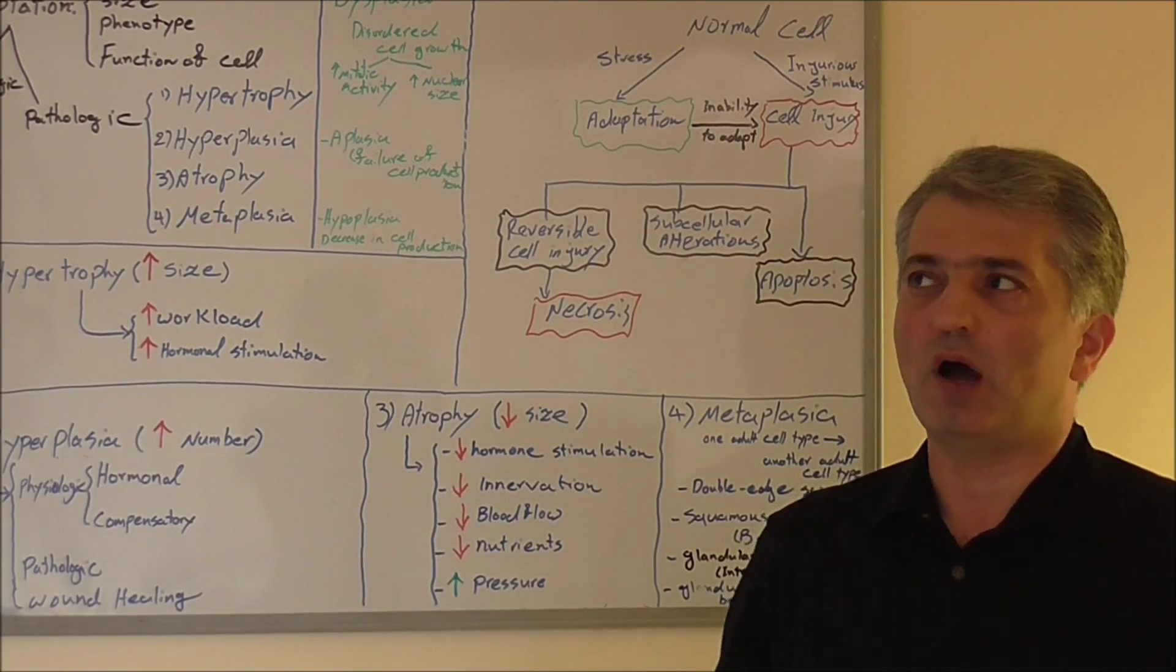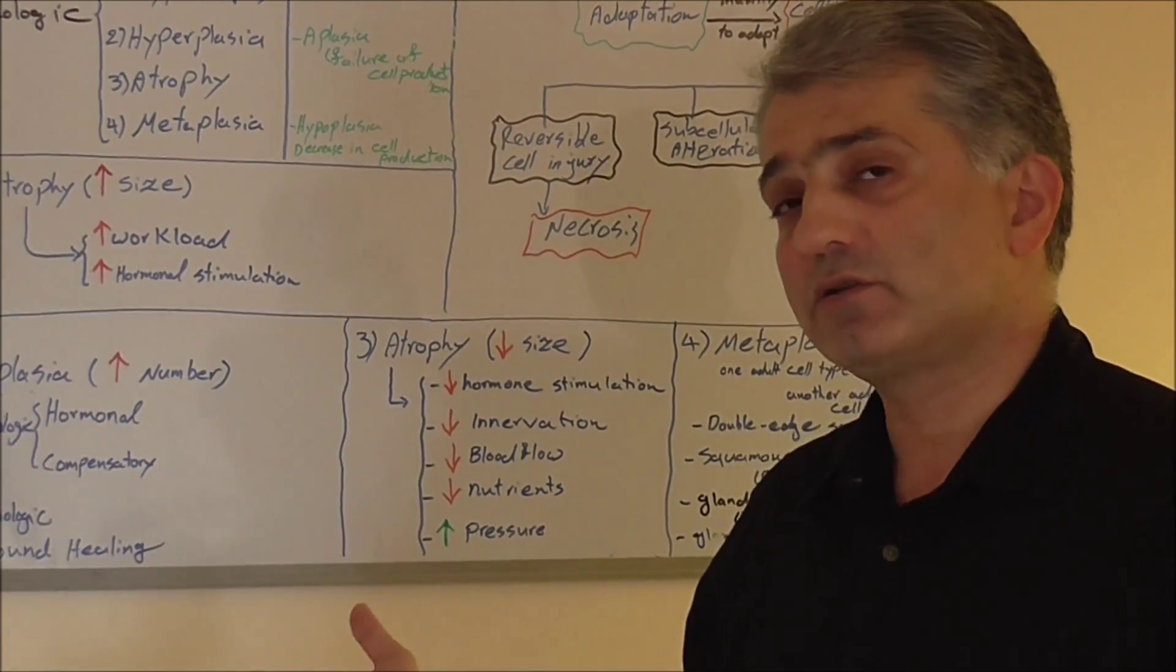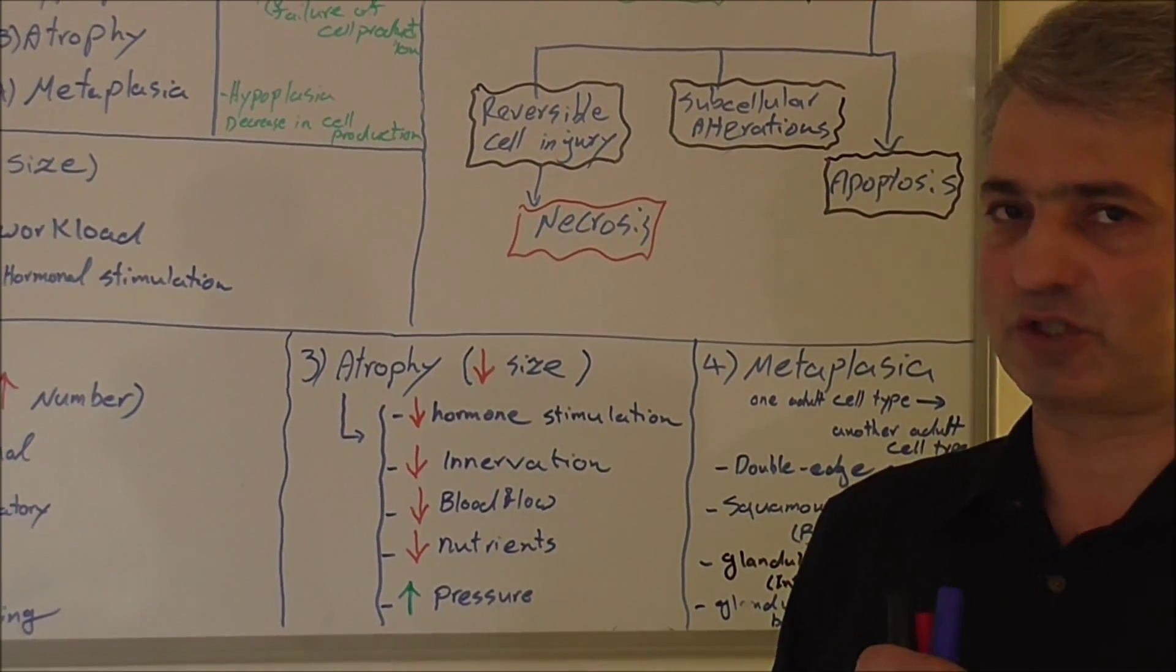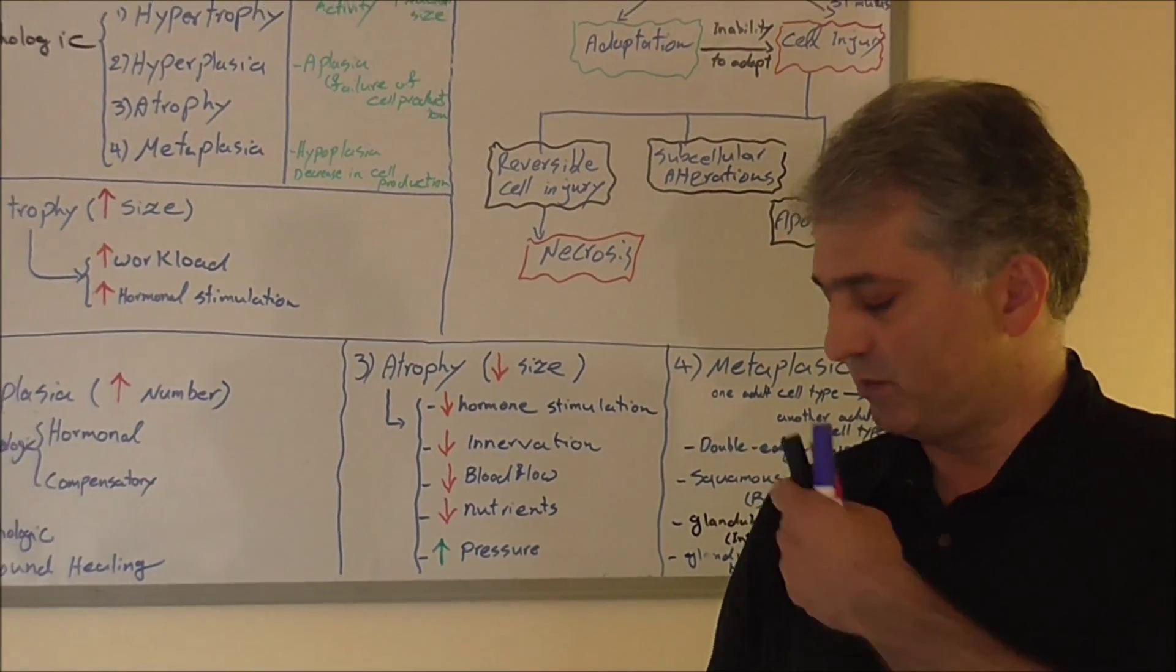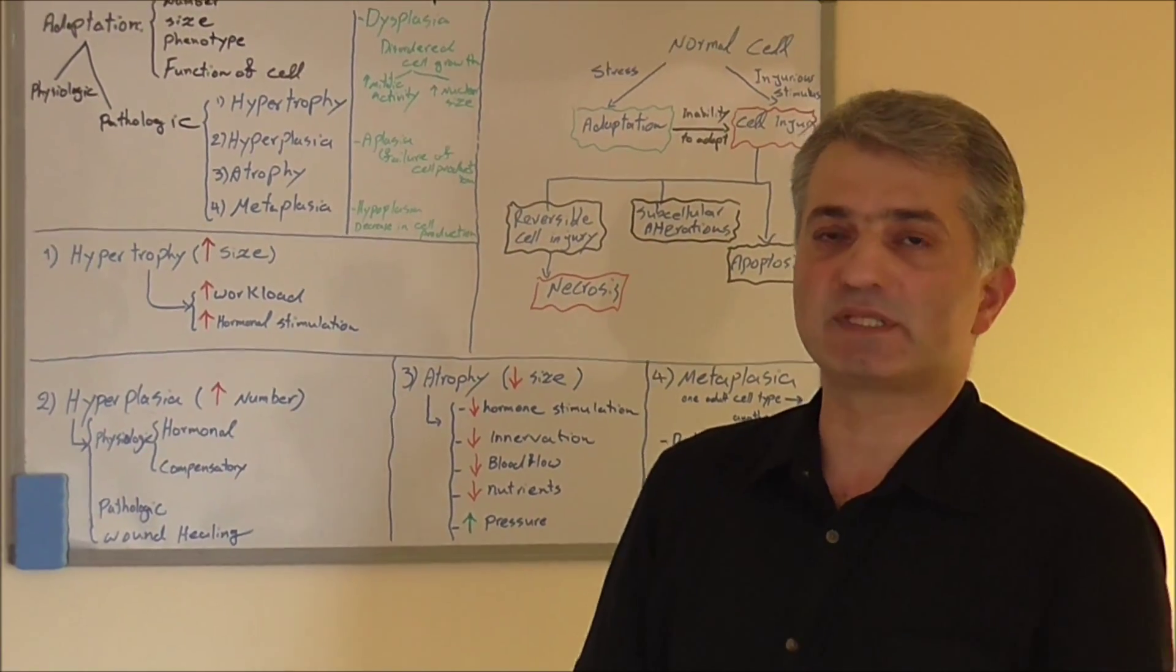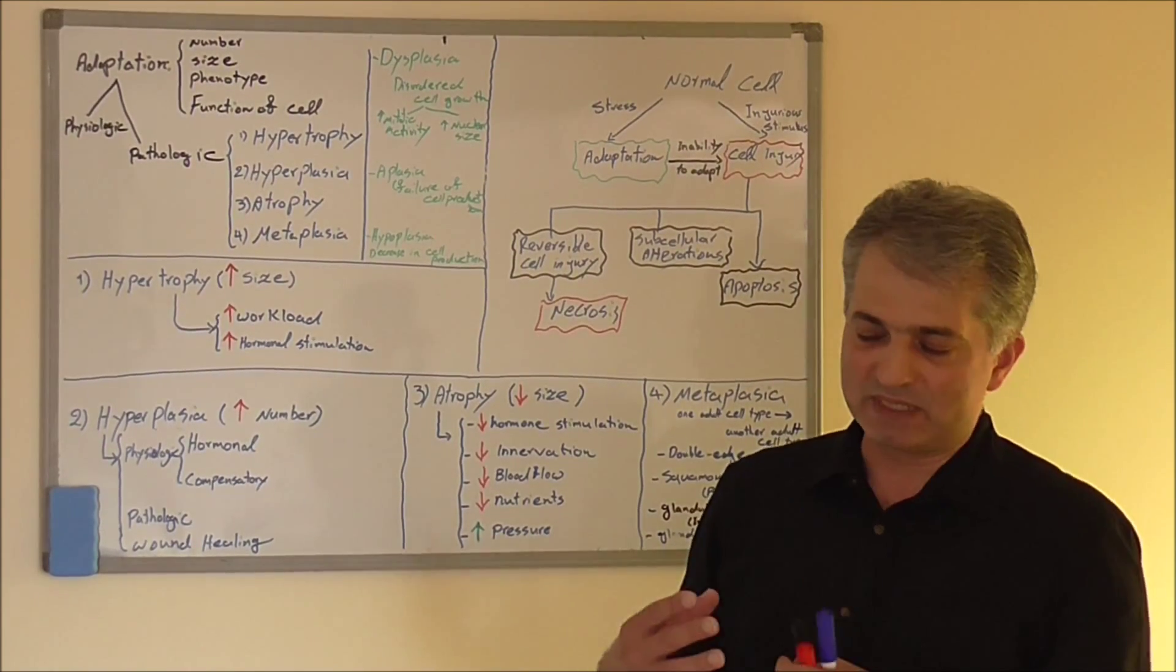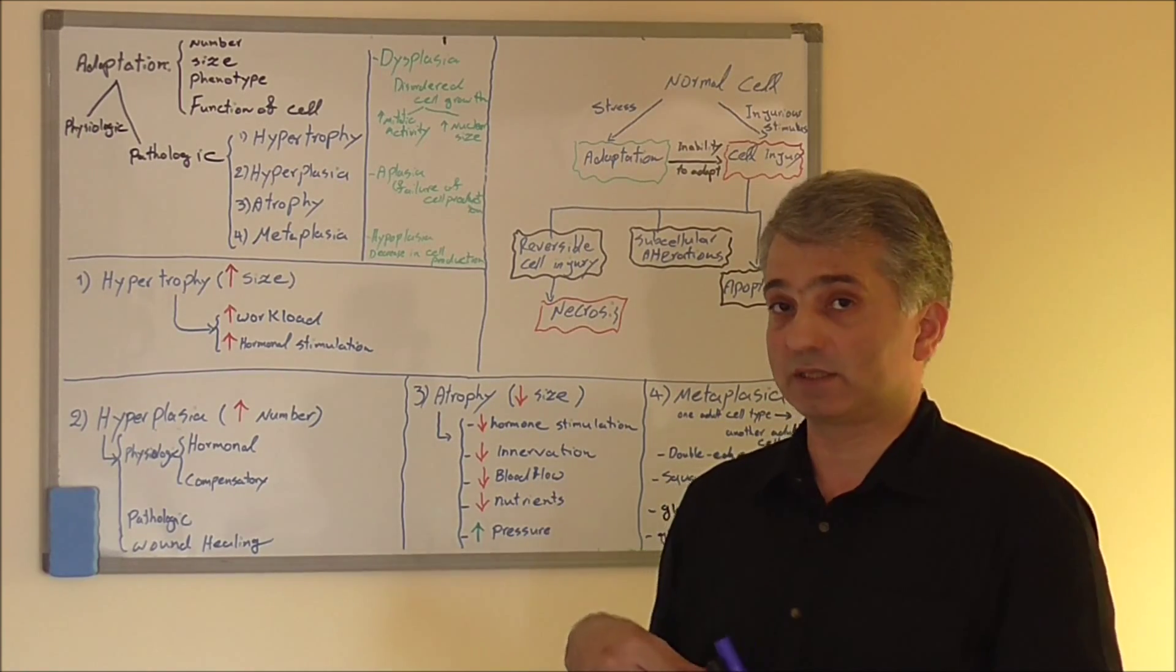Innervation—decreased innervation equals atrophy as well. I'll give you an example. Have you seen people after a stroke? You will see that side they got the stroke, their limbs also compared to the other side, not only is there no power or strength, or maybe a little bit less, but the muscle bulk also decreases. The reason is there is no nerve. No nerve, no muscle function.